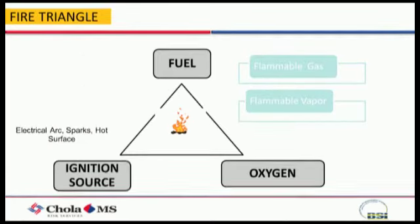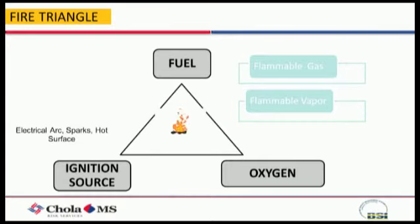We all know about the fire triangle. In hazardous area classification, one thing is that you have the fuel already available in a process plant — a process plant is your refineries and everything that processes petro products. Oxygen is of course present. The ignition source is the one being added by wrong selection. If you have not selected the right product for that area, this ignition source is going to get generated, which is going to create trouble.